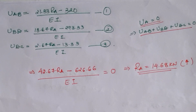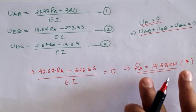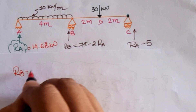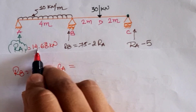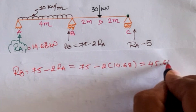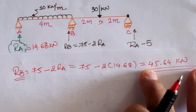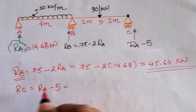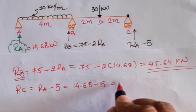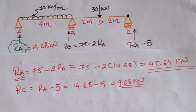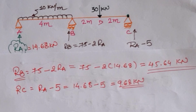From Castigliano's second theorem we calculated the redundant reaction Ra = 14.68 kN. Substituting into Rb = 75 − 2·Ra: Rb = 75 − 2(14.68) = 45.64 kN. And Rc = Ra − 5 = 14.68 − 5 = 9.68 kN. Thus we can calculate all support reactions of the given two-span continuous beam, which is an indeterminate structure, using the minimum strain energy theorem or Castigliano's theorem. Thank you.